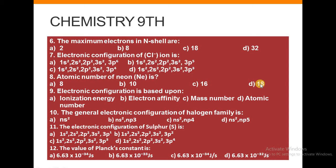Next: Electronic configuration is based upon: a) ionization energy, b) electron affinity, c) mass number, or d) atomic number. Next: The general electronic configuration of halogen family is: a) ns², b) ns² np³, c) ns² np⁴, or d) ns² np⁵.